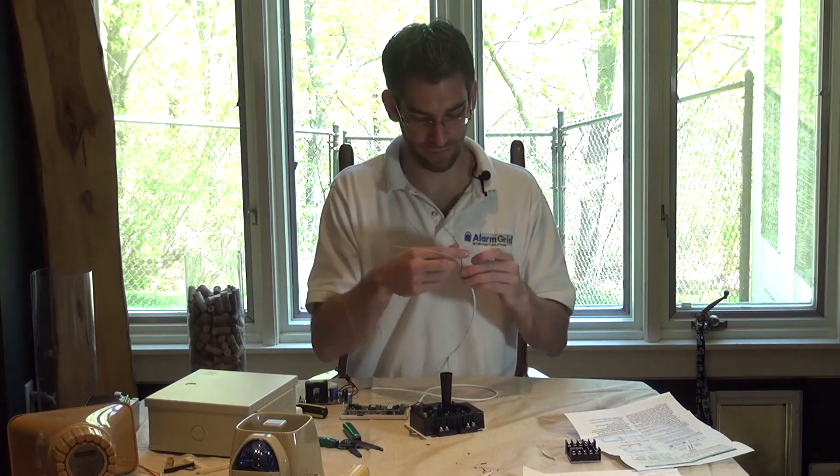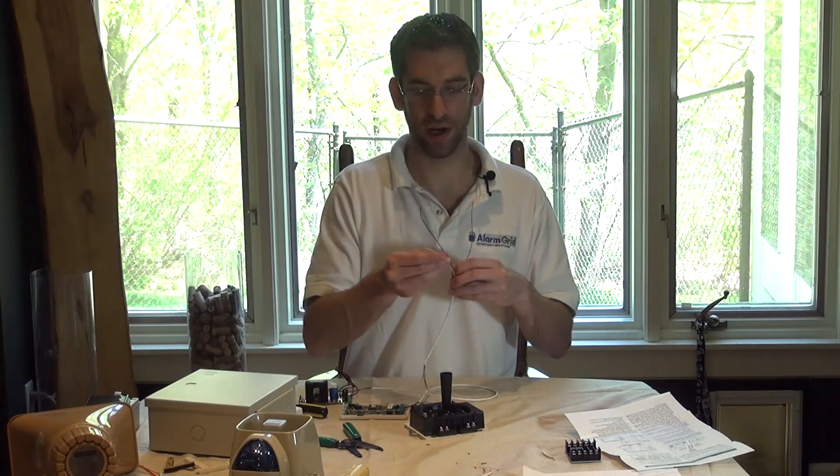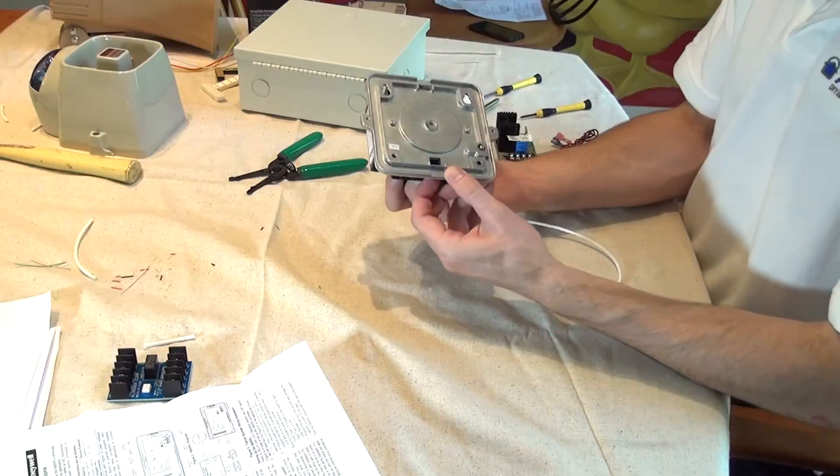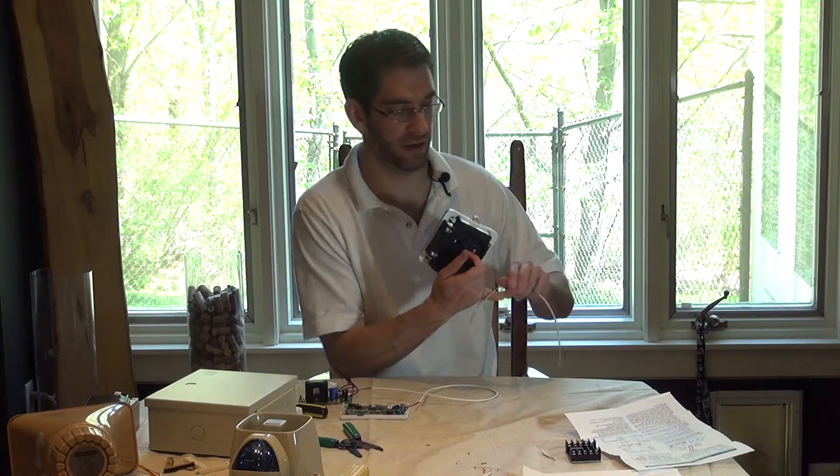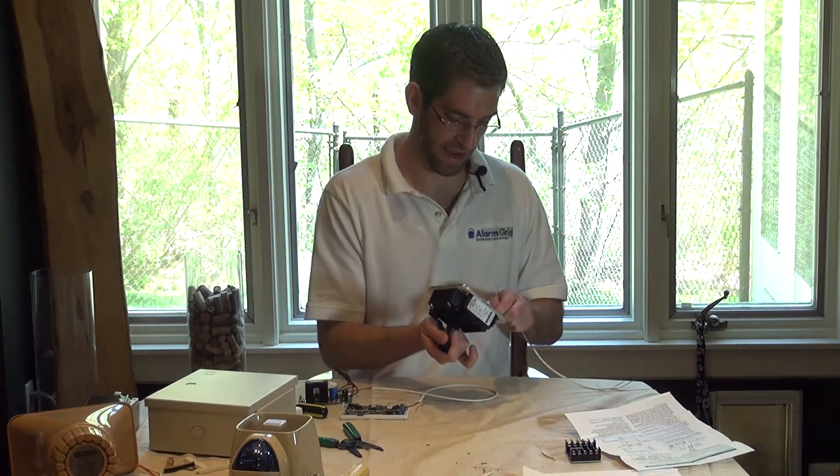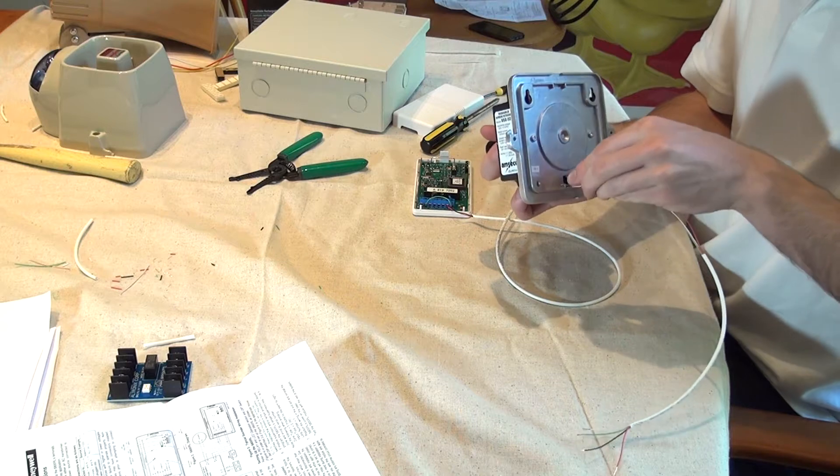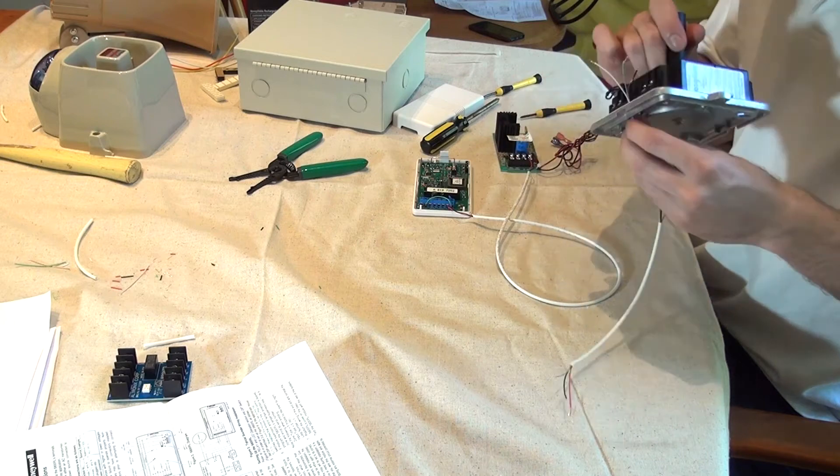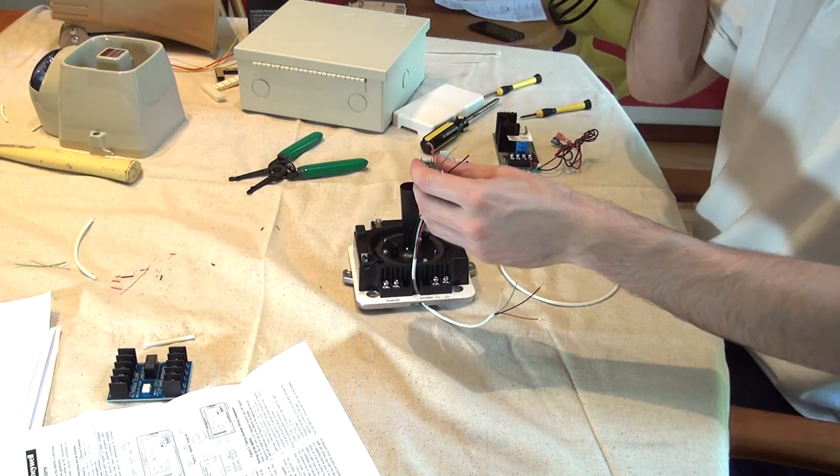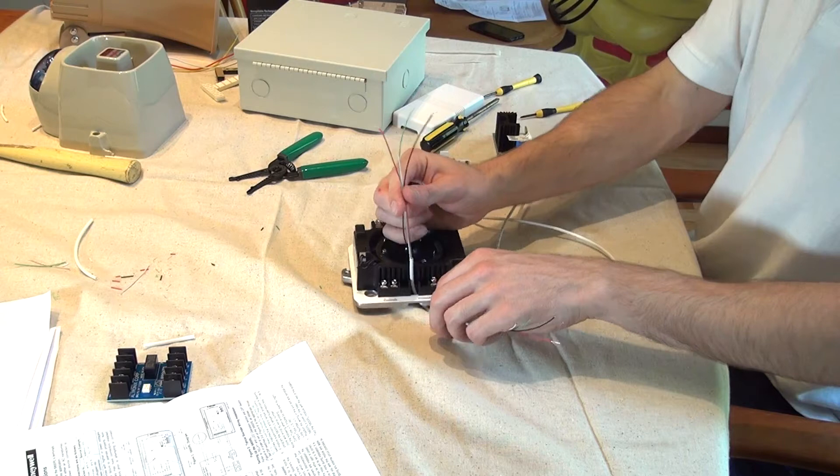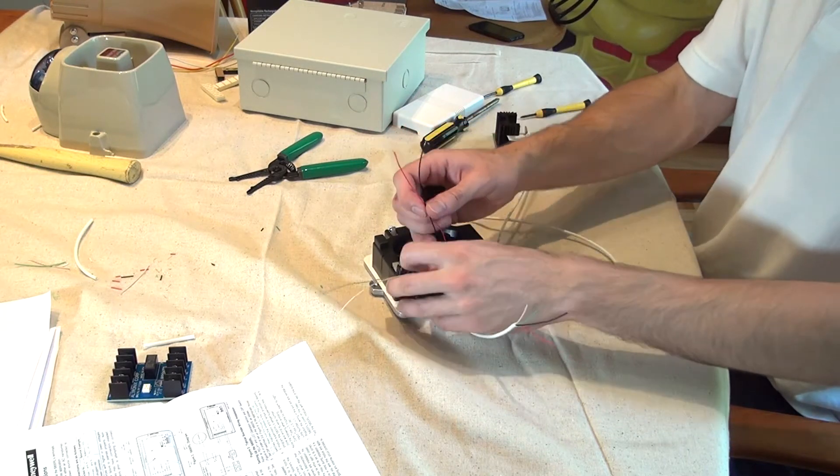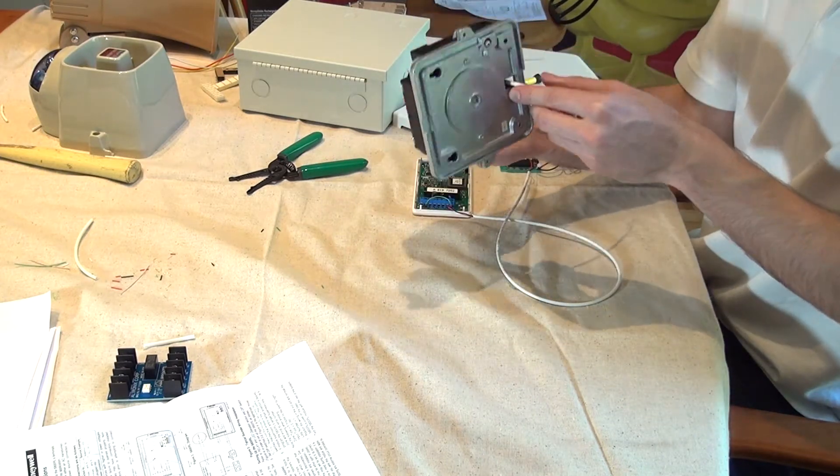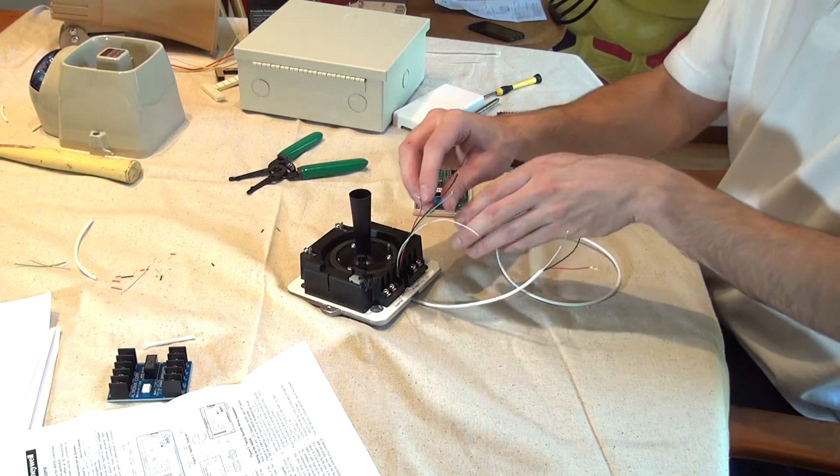We're going to use black and red for our siren, green and white for our strobe. On the back of our siren, we have this nice little wire hole, so we're going to feed all four conductors from the back to the front. That way, when we put on our cover, all the wiring is inside the siren and we could mount to the wall, no problem.